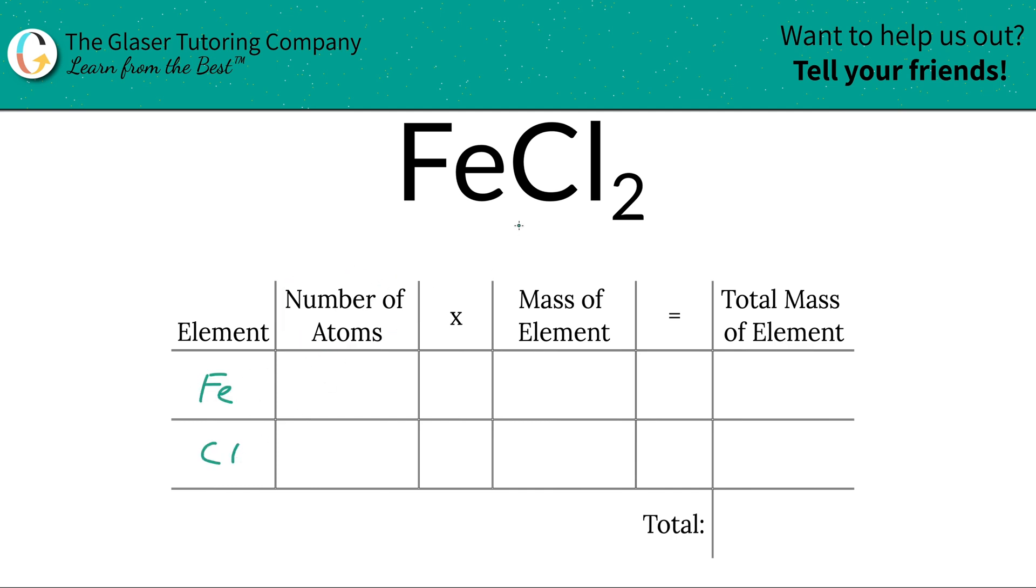Next is to write down the number of atoms of each and that's where the subscripts come into play. At the bottom of iron there's an invisible one, so that means there's one iron. At the bottom of chlorine there's a two, so that two tells us that there are two atoms of chlorine.